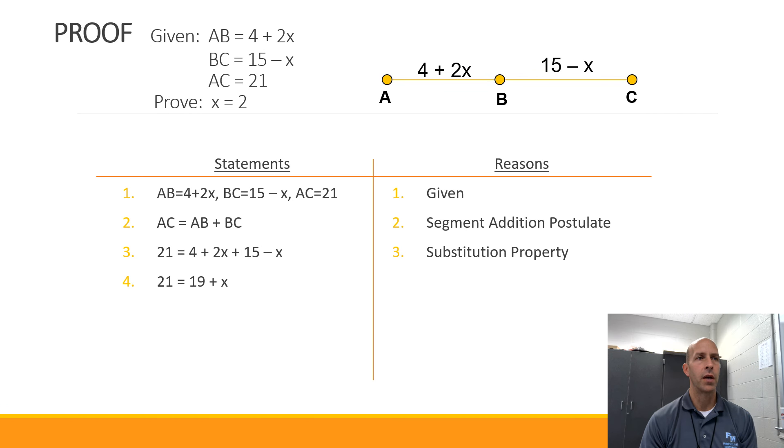Step 3, I'm going to combine like terms on the right-hand side of the equation. 4 plus 15 is 19. 2x minus x is x, and that is by the distributive property.